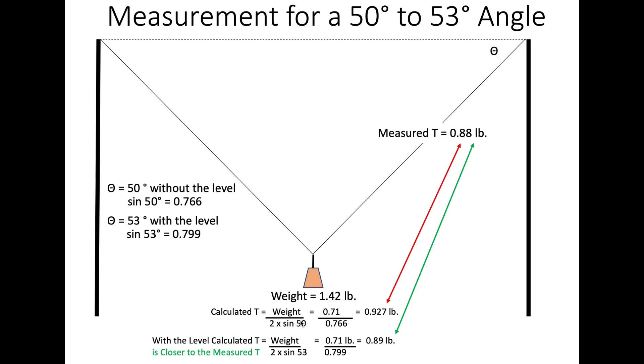So here we were 50 to 53 degrees. 50 without the level, 53 degrees with it. We measured our tension with the digital scale 0.88 pounds. Our weight again was 1.42. So half of that divided by the sine of 50 without the level was 0.766. We calculated 0.927, a little higher than 0.88. With the level where we got the straight line across here, avoided that sag, we had a 53 degree angle. Sine of that is 0.799. Do the calculation, got 0.89.